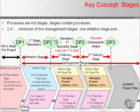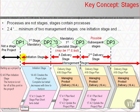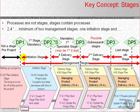Eventually we get to the last stage, and when we get to the last stage, that stage closes by Preparing Planned or Unplanned Closure, and is authorised by the Authorised Project Closure process, DP5.